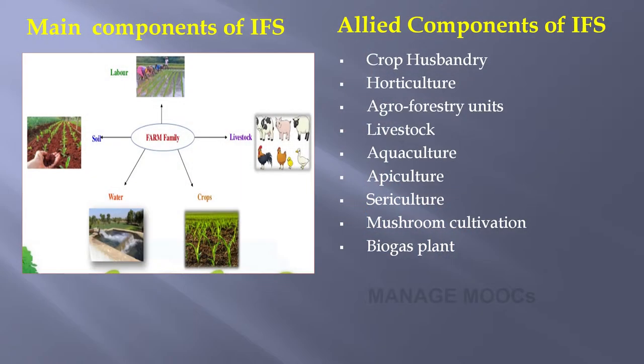What are the components? Integrated farming system consists of mainly two components: one is a major component and the other is an allied component. The major component consists of soil, water, crops, livestock, and labor — these are the major components of IFS.